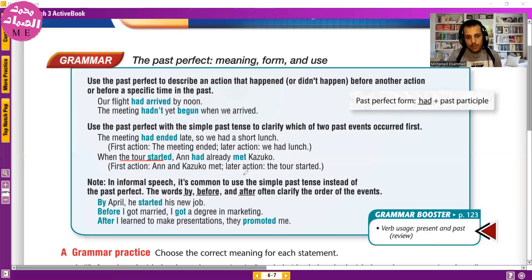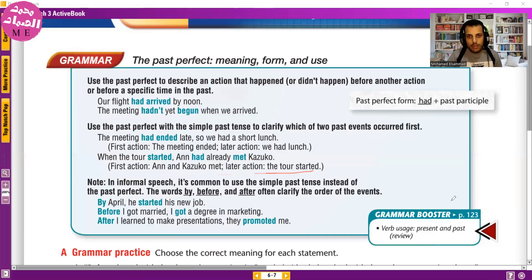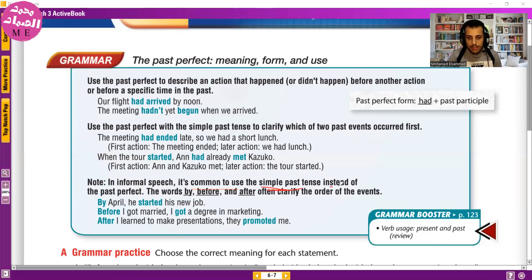Another example: 'When the tour started, they had already met Kazuko.' The first action is meeting Kazuko; the later action is the tour starting. Note that in informal speech, it's common to use the simple past tense instead of the past perfect.